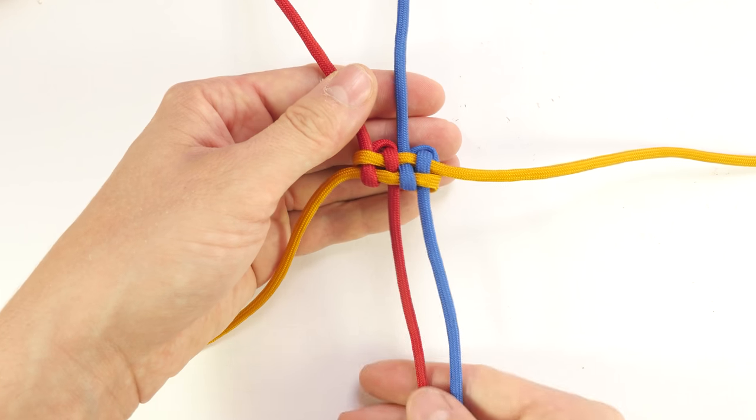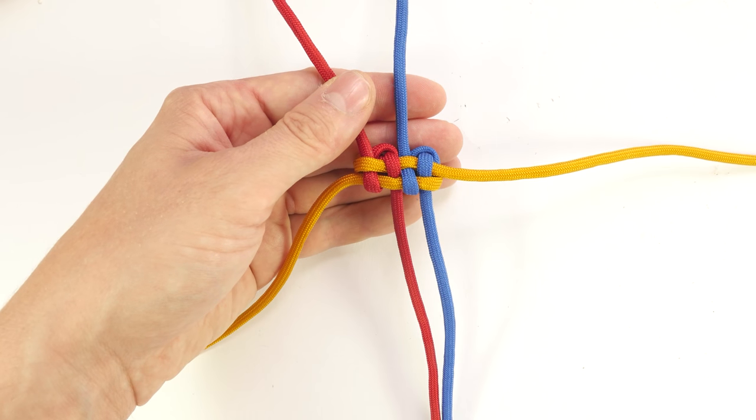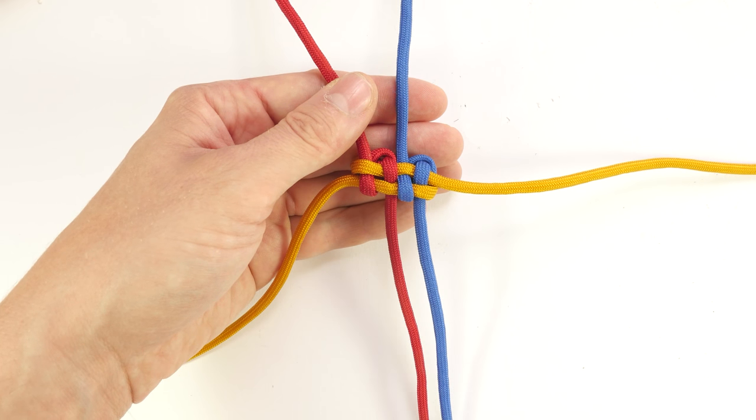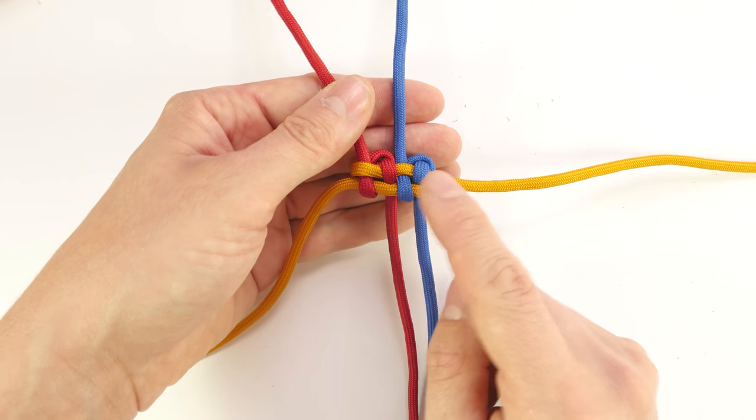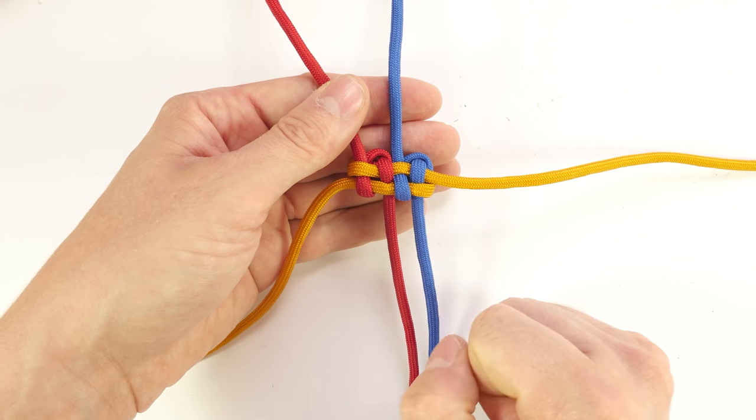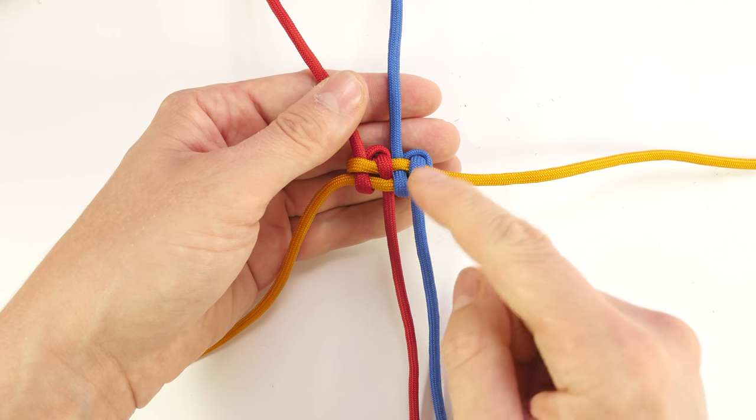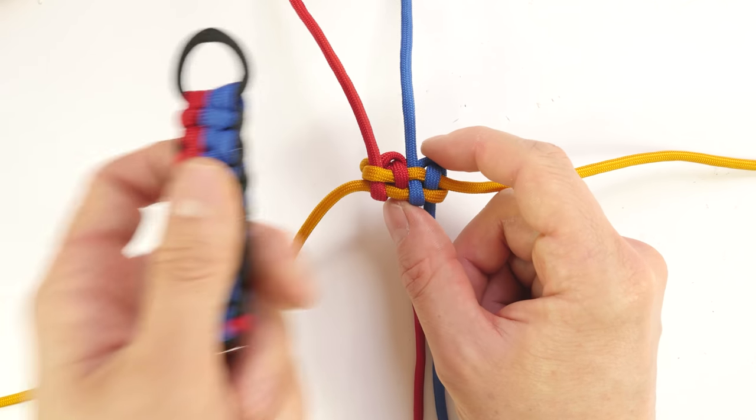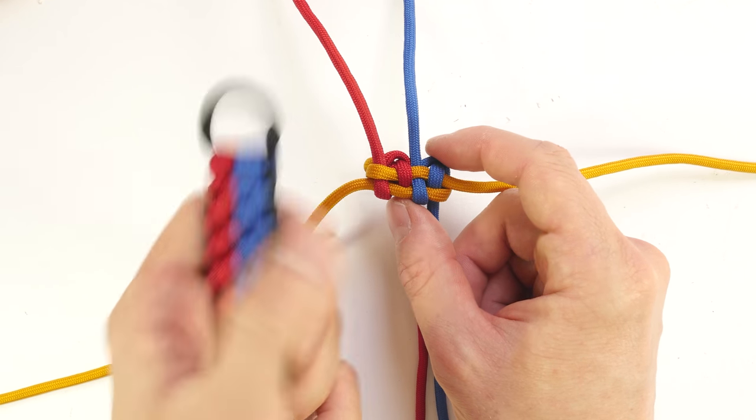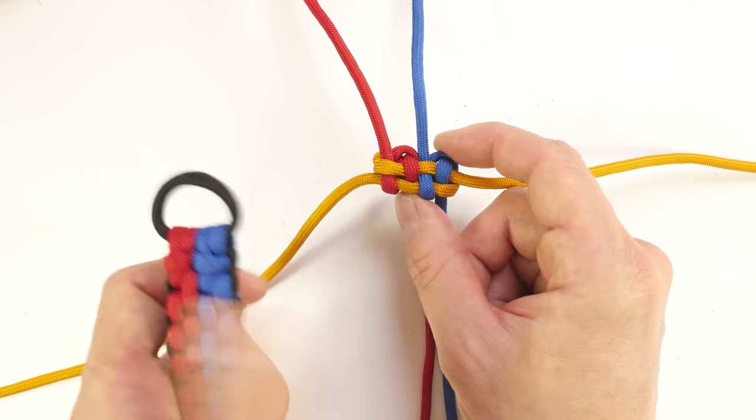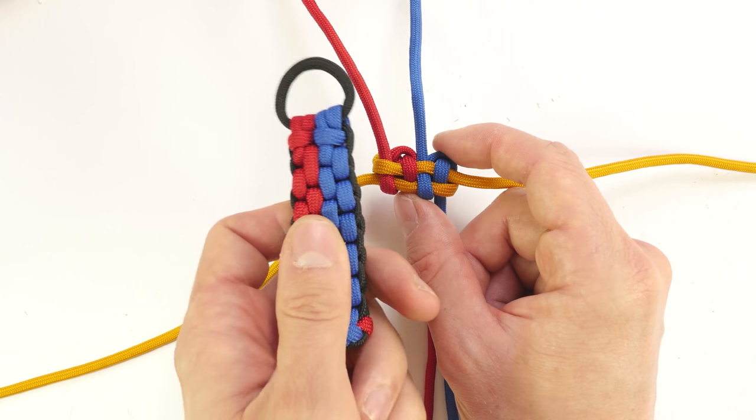So this should be the setup, once you finish tightening up. Now, we did a single, double box knot. If we continue, what we get is the double box knot sinnet. So this is a single knot, and if you stack them, you get a sinnet.